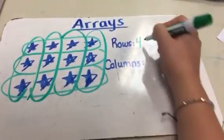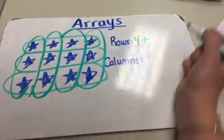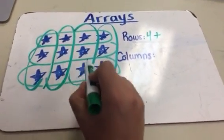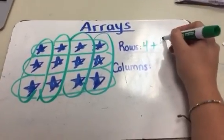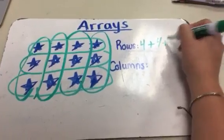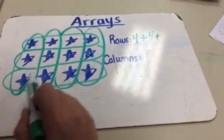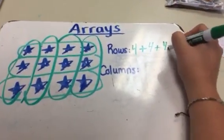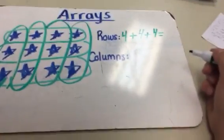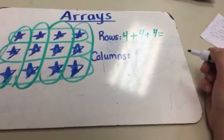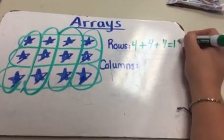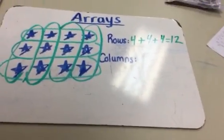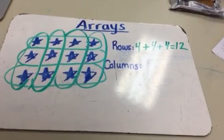So I would put 4 plus 4 plus 4, which equals 12. That's called repeated addition.